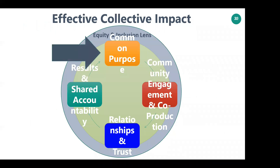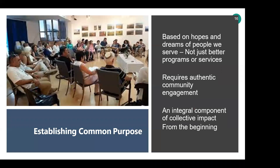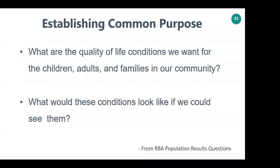The next component is common purpose. Common purpose should be based on the hopes and dreams of people we serve and the people that live in the communities we serve, not just better programs or services. It requires authentic community engagement to identify those hopes and dreams, and it must be an integral component from the beginning. You can't just decide what you're going to do and then get input — we need to engage the community from the beginning.